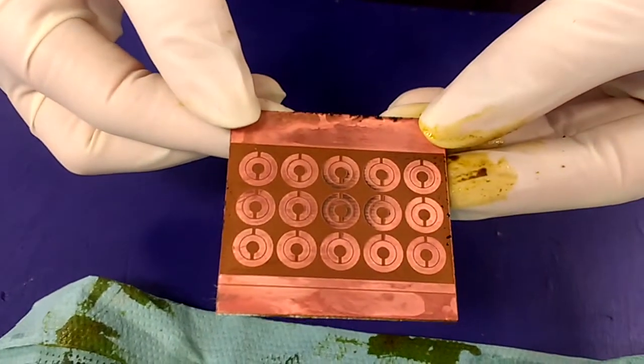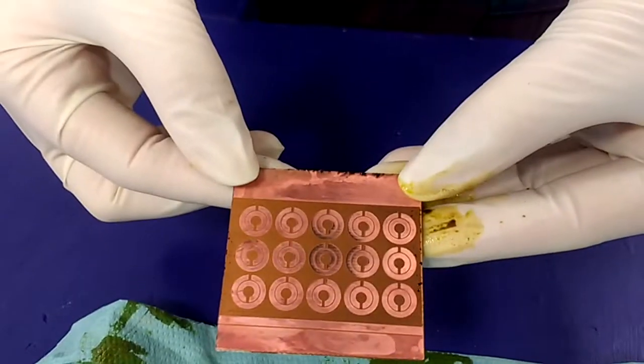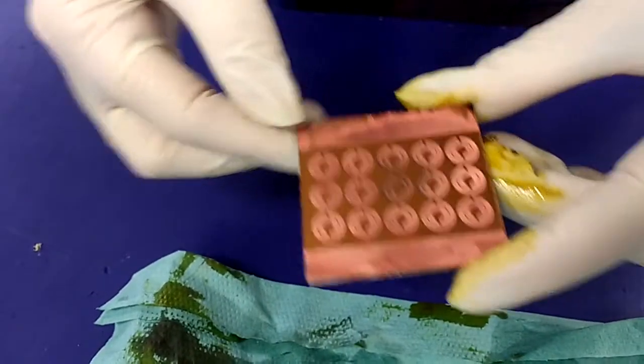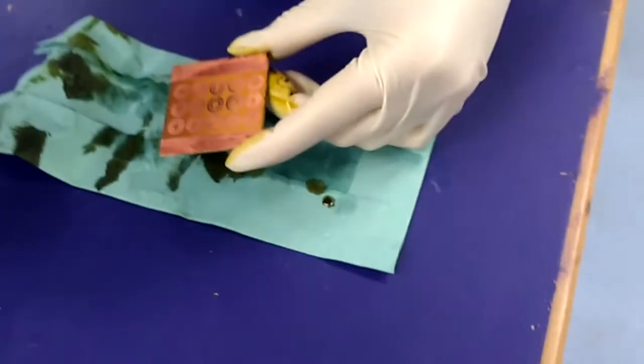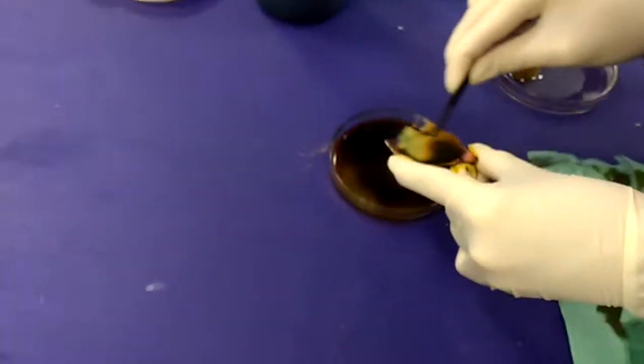Look at that. You can see there's still a lot of pink because that's the glue layer. The fiberglass board hasn't been exposed yet. Let me go and find you what a fiberglass board looks like once the copper has been removed. Follow me.